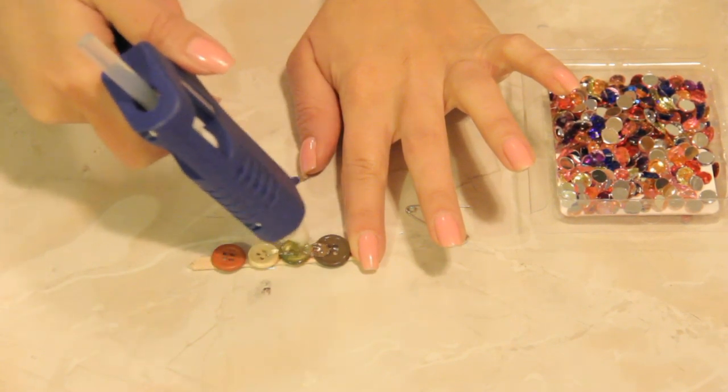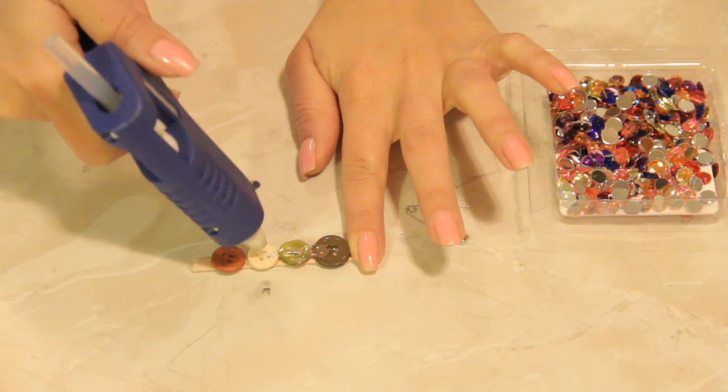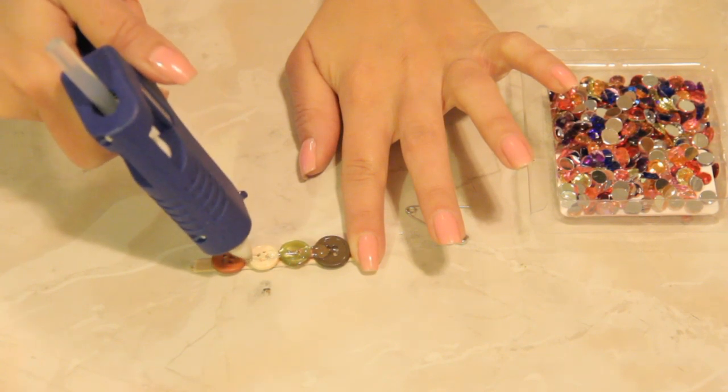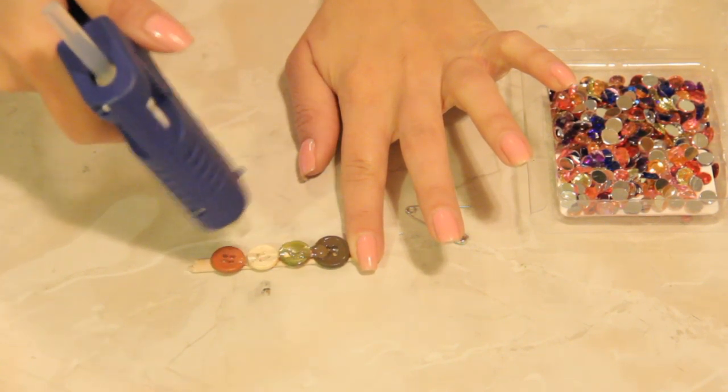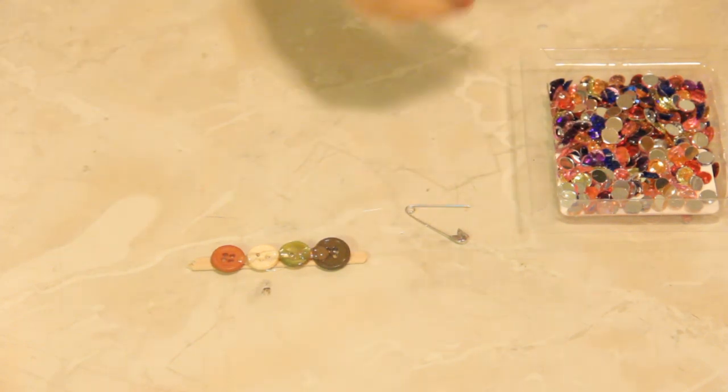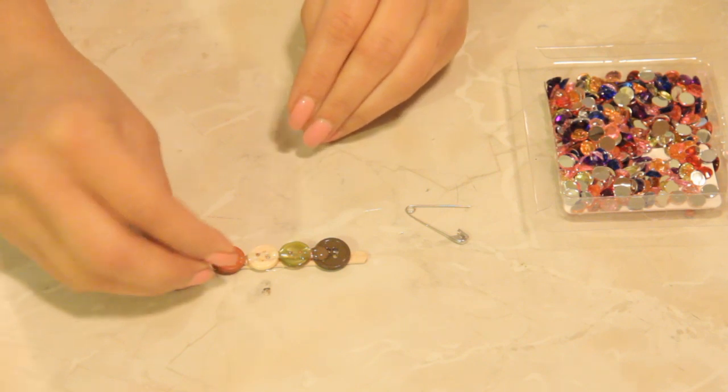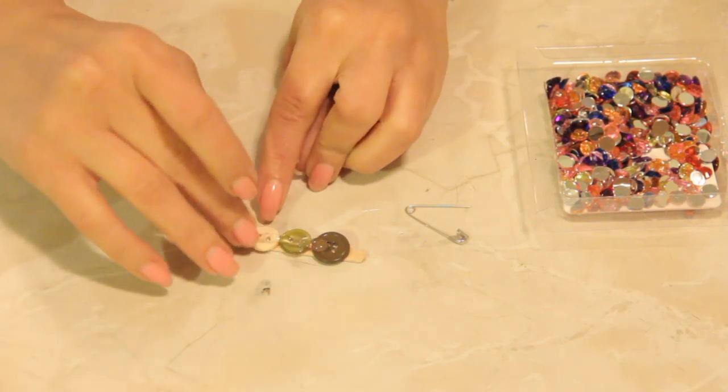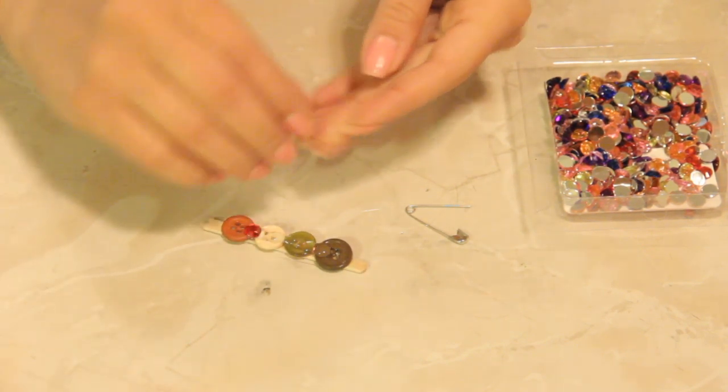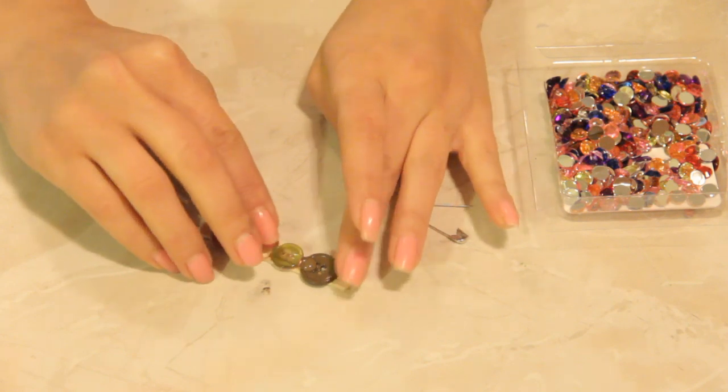And I'm going to layer a little bit more hot glue along the top of these buttons, and I'm going to take these little rhinestones and just add some rhinestones to the top of the buttons as accents.